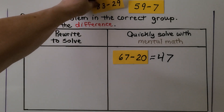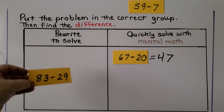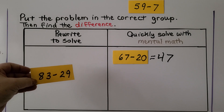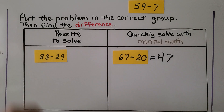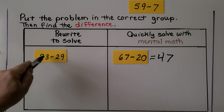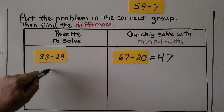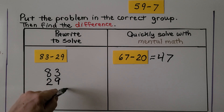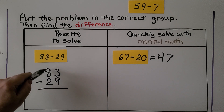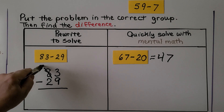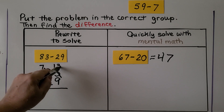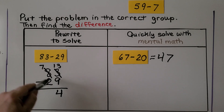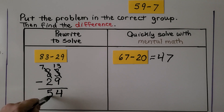What about the next one — do we need to rewrite it to solve, or can we quickly do it with mental math? If you said rewrite to solve, you're right. We have nine ones from three ones, and that's not enough. If we rewrite it with 83 and 29 underneath, we can regroup from the tens. The 8 tens becomes seven tens and the three ones becomes thirteen ones. Now we have enough. Thirteen minus nine is four. Seven tens minus two tens is five tens. It's 54.